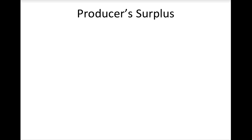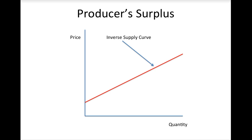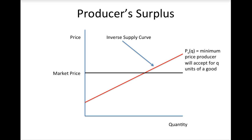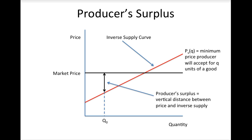Just as consumer surplus is a way to measure how much a consumer benefits from a market transaction, producer surplus measures how a firm or group of firms benefit from a transaction. To calculate producer surplus, we use the inverse supply curve, which measures what the price would have to be in order for the producer to be willing to sell a given quantity of goods. Producer surplus is simply the difference between the minimum price that a producer is willing to accept and what they actually receive. For a given quantity, producer surplus is the vertical distance between the market price and the inverse supply curve.